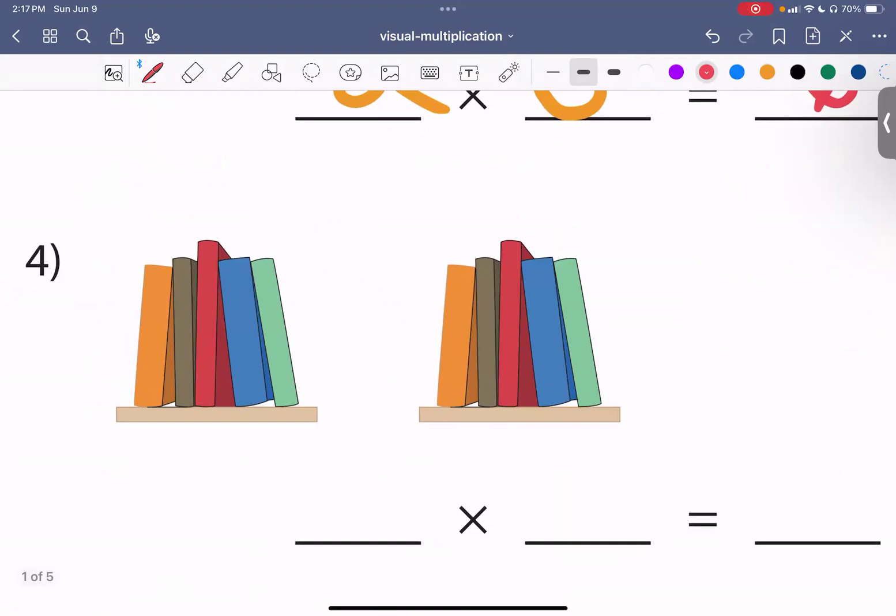We have two sets of books. In each set, we have, let's see how many books. We have one, two, three, four, five. In each set, we have five books. So, five times two, or five plus five, if you want to look at it as adding, is ten books.